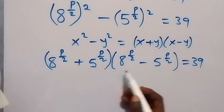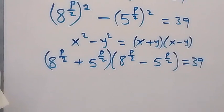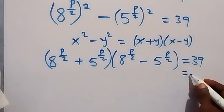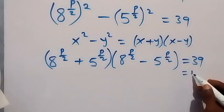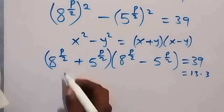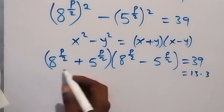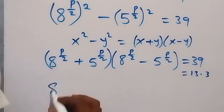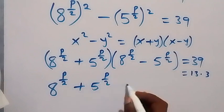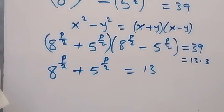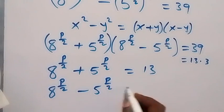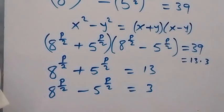The first bracket will be greater than the second bracket. We can separate these into factors of 39, which is 13 times 3. So it implies the first bracket gives us: 8 raised to power p over 2 plus 5 raised to power p over 2 equals 13, and 8 raised to power p over 2 minus 5 raised to power p over 2 equals 3.